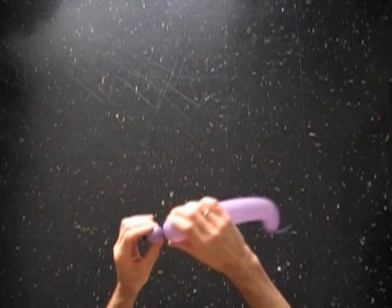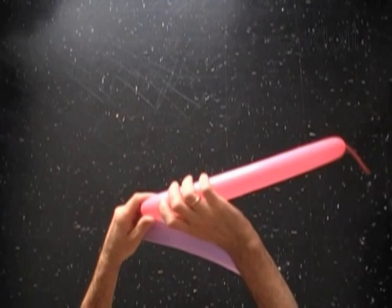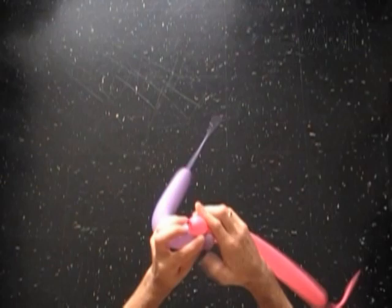We are going to work both balloons in exactly the same way. Let's twist the first soft, no more than one inch long bubbles on both balloons. Lock all ends of the first bubbles in one lock twist. This way we are connecting two balloons together.